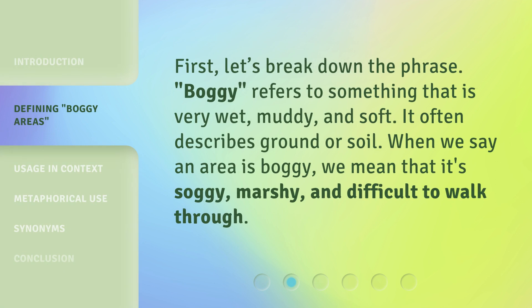First, let's break down the phrase. 'Boggy' refers to something that is very wet, muddy, and soft. It often describes ground or soil. When we say an area is boggy, we mean that it's soggy, marshy, and difficult to walk through.